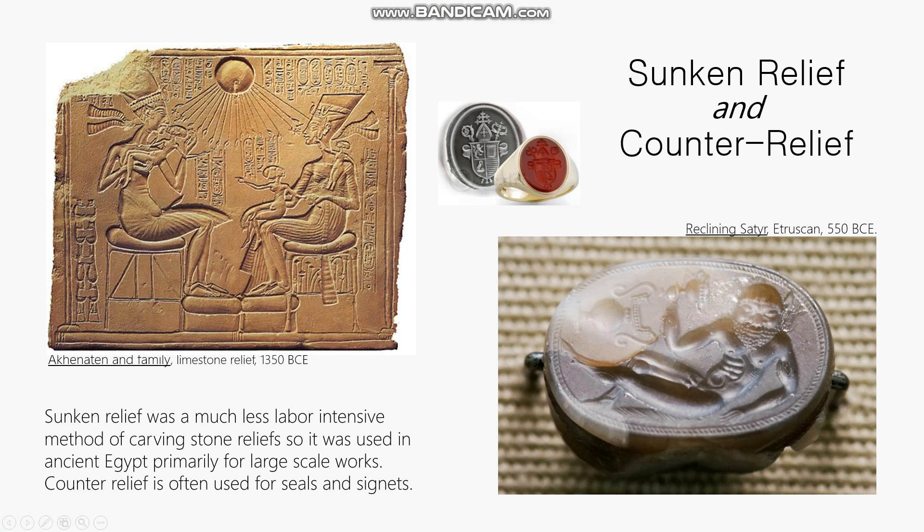This particular piece is from the Amarna period — Akhenaten with his Queen Nefertiti — and in this case the sculptors are using sunken relief in a context where normally Egyptian artists would never use it. It's a much smaller, intimate scale, a family scene, not a big historical documentation on the side of a building. That's representative of how unusual the Amarna period was in relation to all of Egyptian art — they were using a form normally reserved for a completely different context.